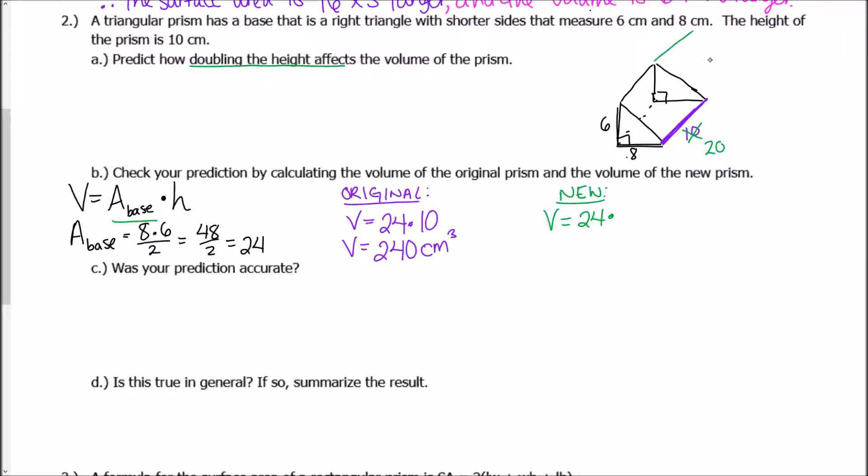And the height is now instead of 10 will be 20. It's two times bigger. Okay, so right here, we'll have an even bigger prism. So we'll do 24 times 20 instead of 24 times 10. So this is going to be right here, 480 centimeters cubed.